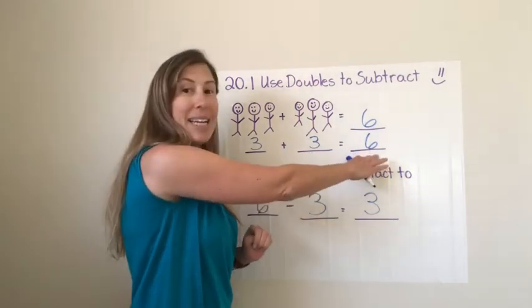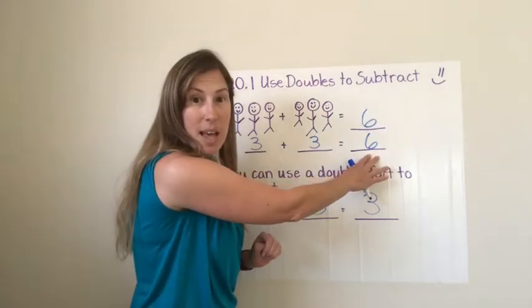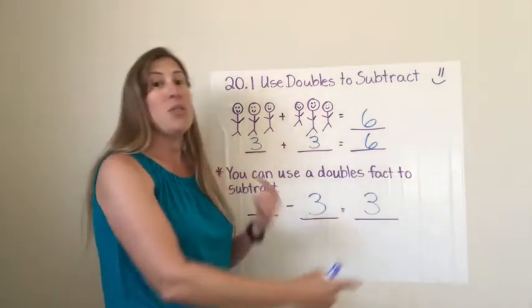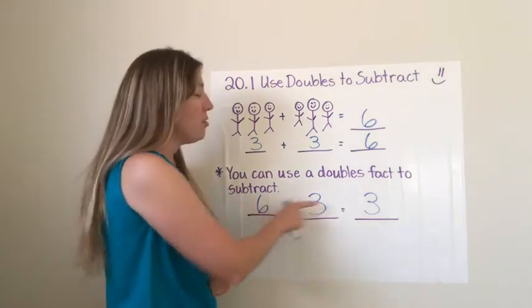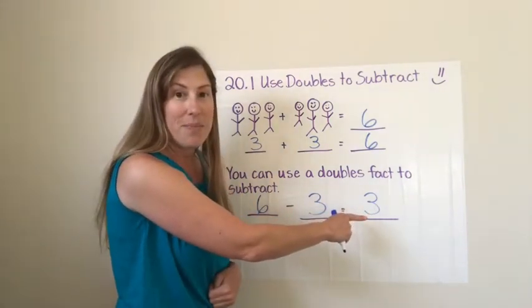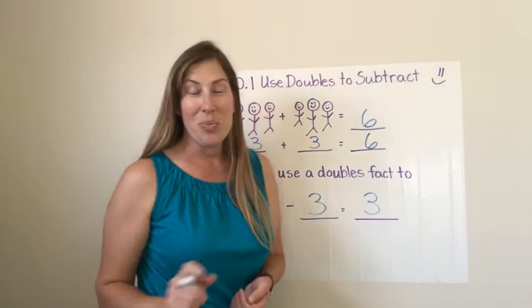So here when you're adding the greatest number is always the sum. When you subtract you do the reverse. You start with the greatest number and you can take away the others. All right. Keep watching. We've got more.